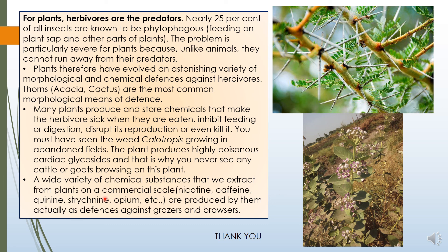A wide variety of chemical substances that we extract from plants on a commercial scale — like nicotine, caffeine, quinine, strychnine, and opium — are actually different chemical substances produced by plants as a defense mechanism. We human beings have tried to extract the benefits of these chemical substances. They are produced as defense against grazers and browsers.